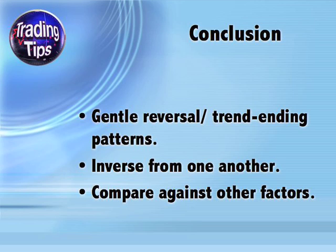To recap: rounded tops and bottoms are gently formed reversal and trend-ending patterns that are essentially inverse from one another. If you understand the rules of trading a rounded top, you can apply the same rules backwards to the rounded bottom. For a greater probability of success, look at the stock's moving averages and volume trends, and also its general trend lines and other statistical factors such as MFI, RSI, stochastics, Bollinger Bands, MACD, etc. — all of which have been covered in previous TradingTips.com videos.